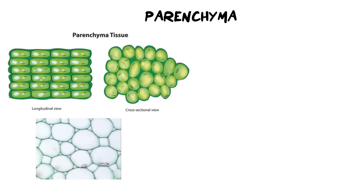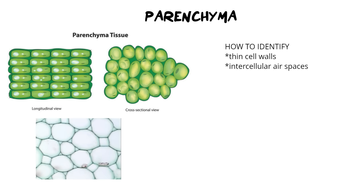We're now going to move on to the next kind of permanent tissue, which is our ground tissues, starting with parenchyma. These are the most abundant tissues in plants. We see three different kinds and I'm going to go through how to identify them and their functions. When looking at parenchyma we need to see it in a diagram and in a micrograph, and we're looking for two things. The first is it must have a thin cell wall, which we can see very clearly in the micrograph.